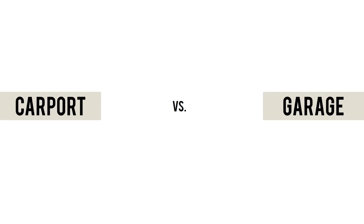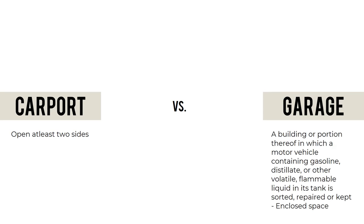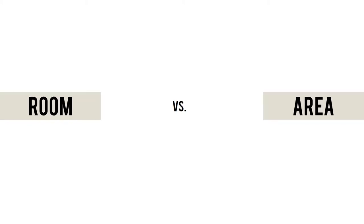Residential components — Carport vs. Garage: A carport is open on at least two sides. A garage is a building or portion thereof in which a motor vehicle containing gasoline, distillate, or other volatile flammable liquid is stored, repaired, or kept in an enclosed space. Garages are typical in US homes with roll-up doors, while carports are typical in the Philippines — just a roof, open on some sides.